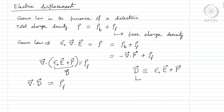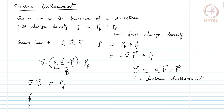D vector is called electric displacement, and its divergence expresses the free volume charge density. In integral form, the Gauss law looks like the closed surface integral of D dot dA equals the total free charge enclosed. Let us consider an example of this.